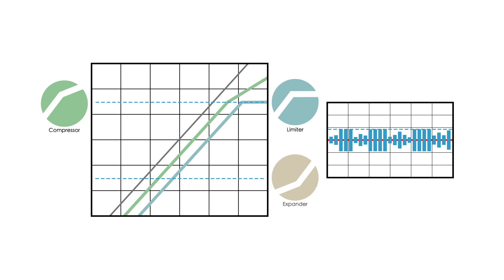On the other hand, the expander reduces the signal below the threshold by a set ratio, such as 2 to 1, while a gate cuts out the signal below the threshold entirely.